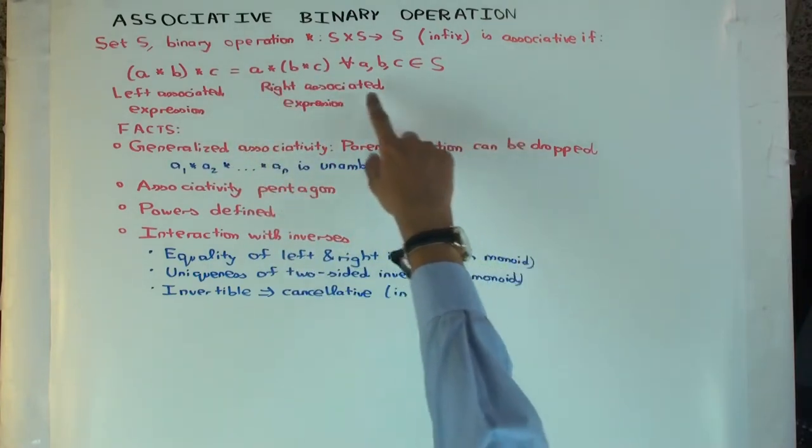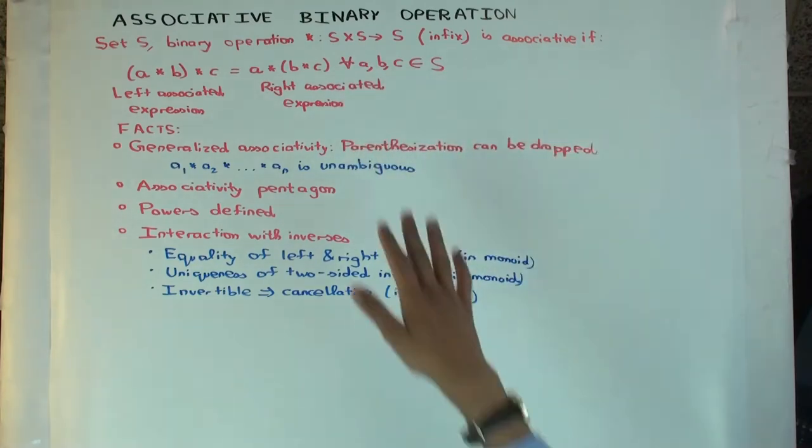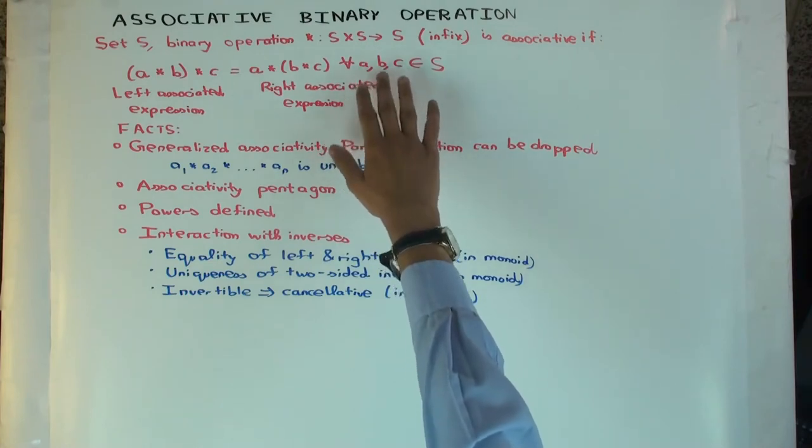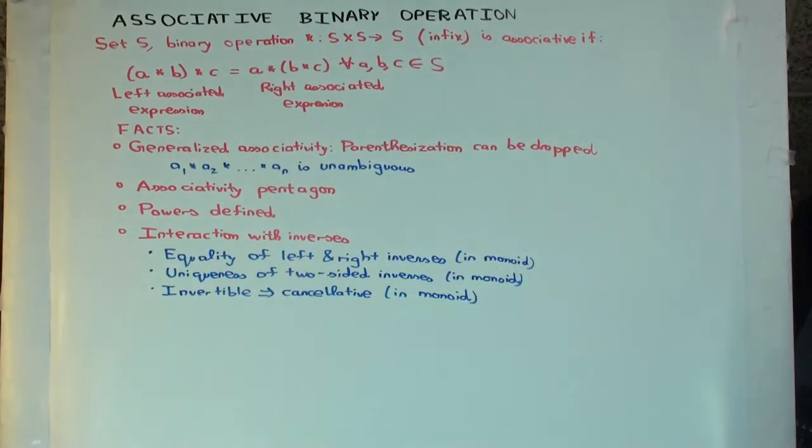Now what do I want to clarify here? That A, B, and C are allowed to be equal. So this is true not just for all different A, B, C. It's actually true for all A, B, C, where some of them could be equal, some could be different, or all equal, etc.